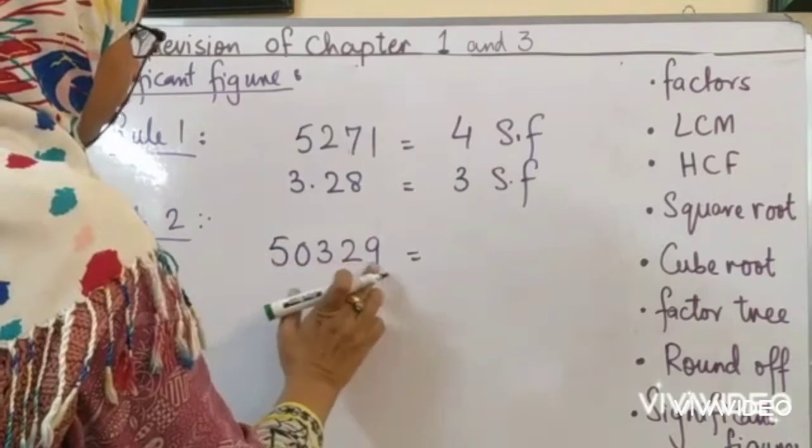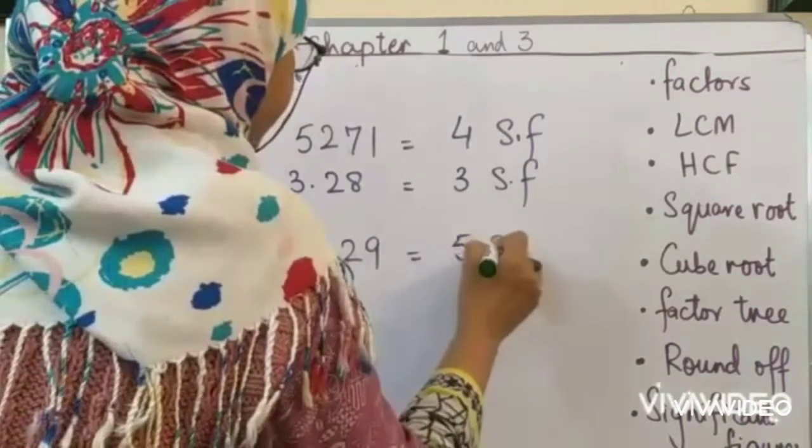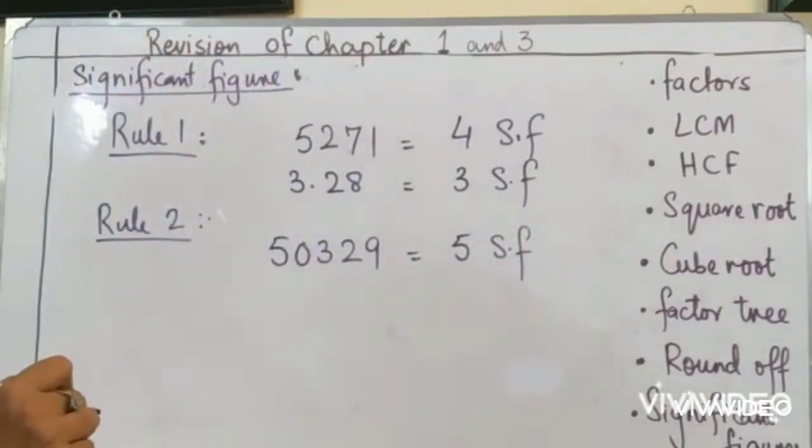So how many? 1, 2, 3, 4, 5. Five significant figures. Clear?